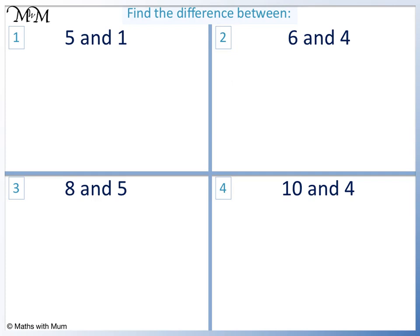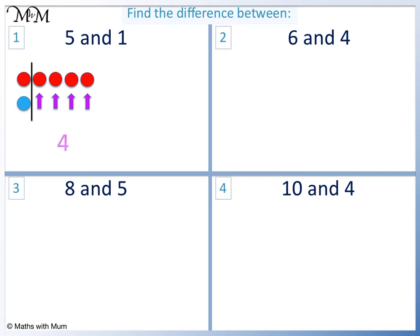Question 1: Find the difference between 6 and 4. Here is 5 and here is 1. Counting on, we have 1 2 3 4. The difference is 4.